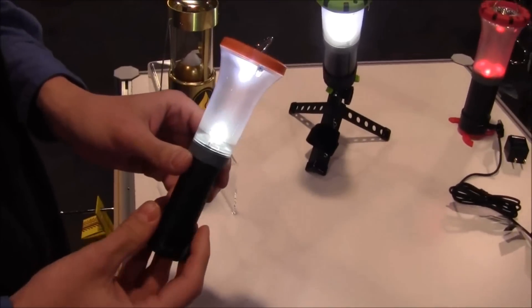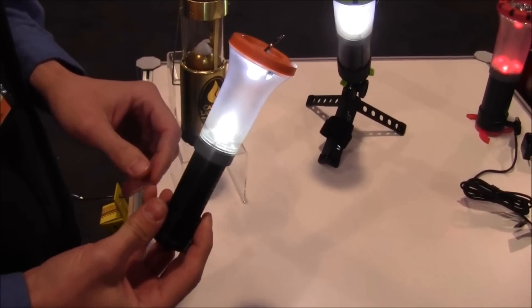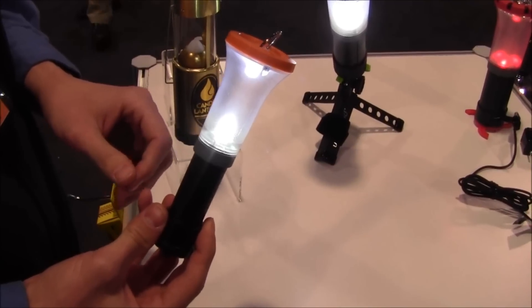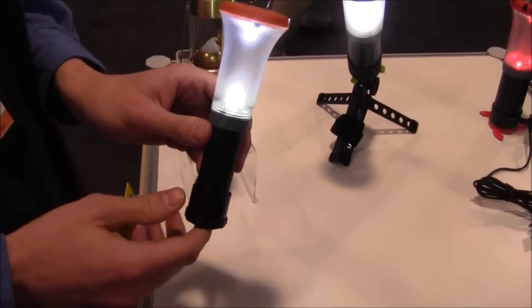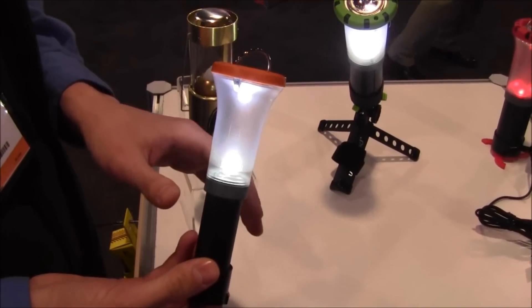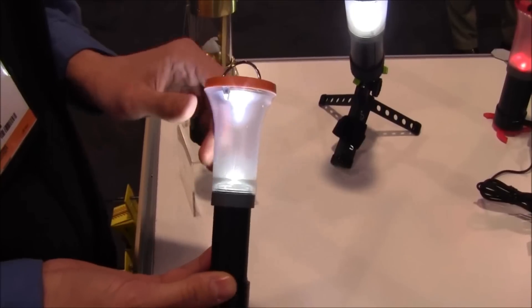This is our Claris model, runs on three AAAs, goes to about 150 lumens. It will burn for about 70 hours, dimming over time. You'd rather have a little light than no light, so it's not just going to cut off after a couple hours.